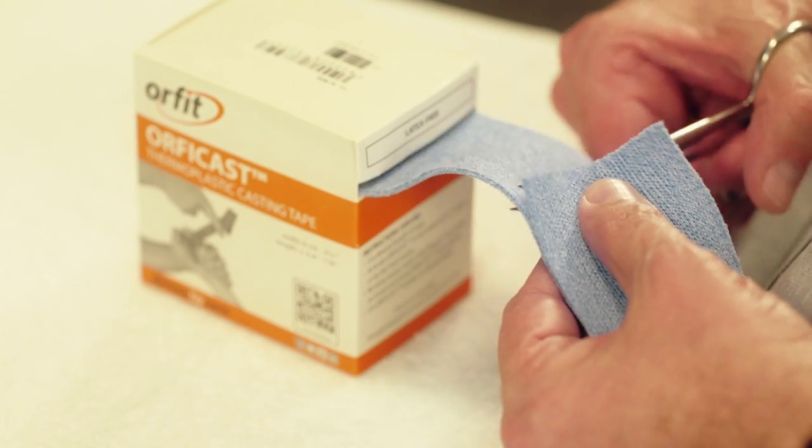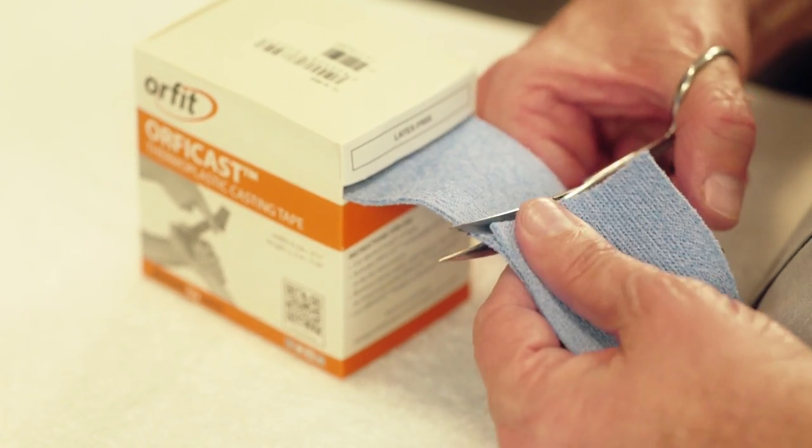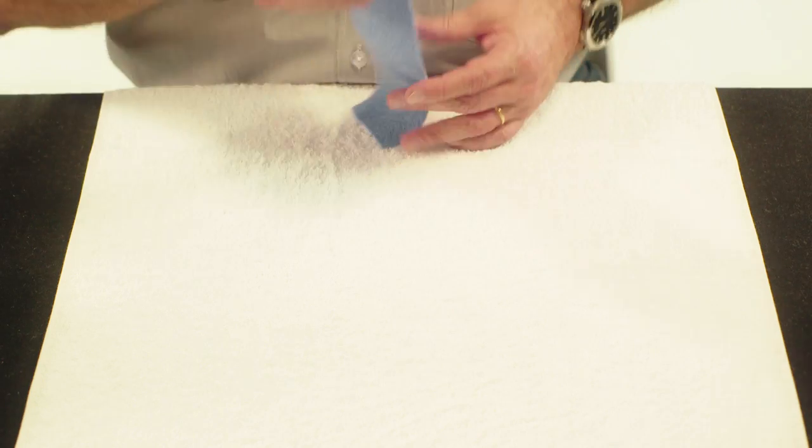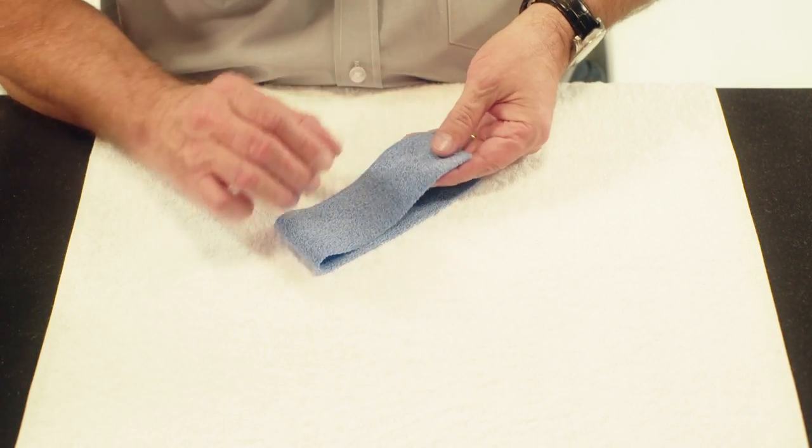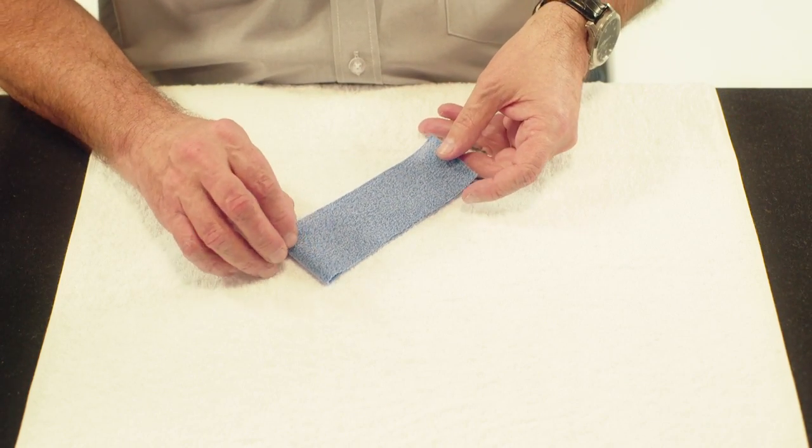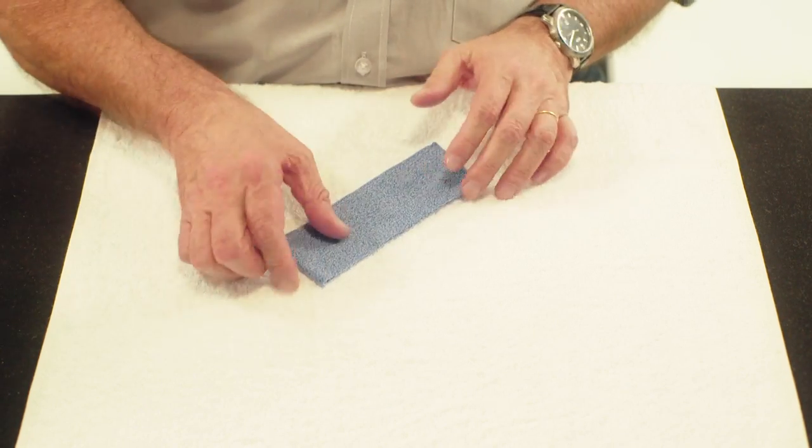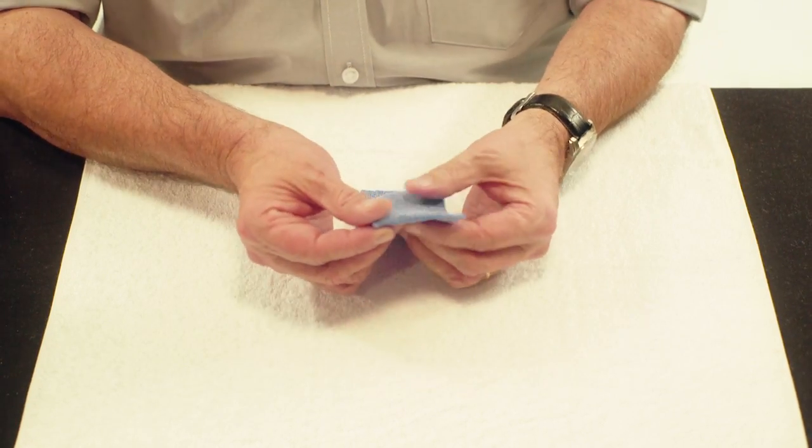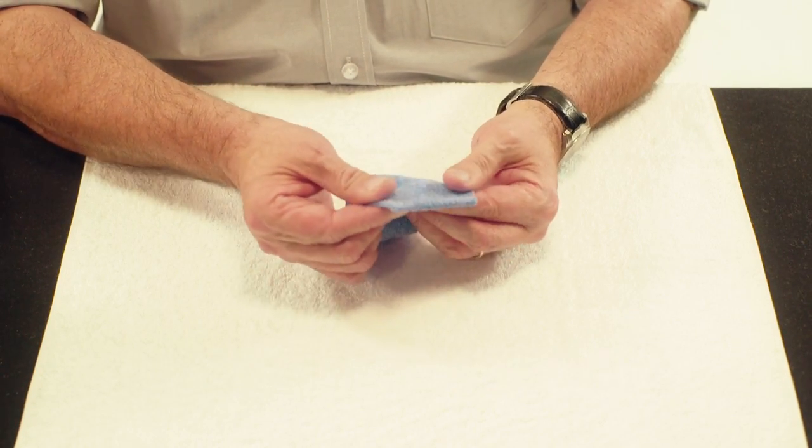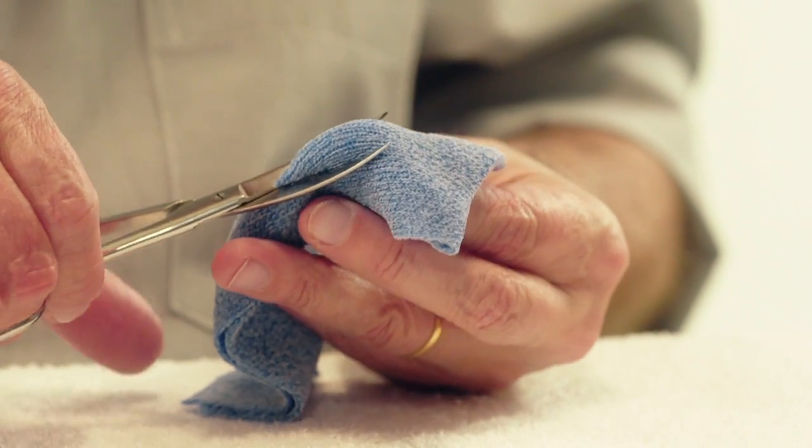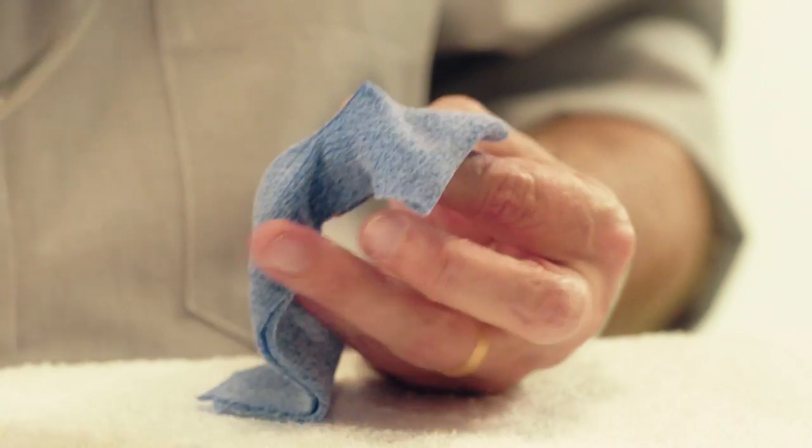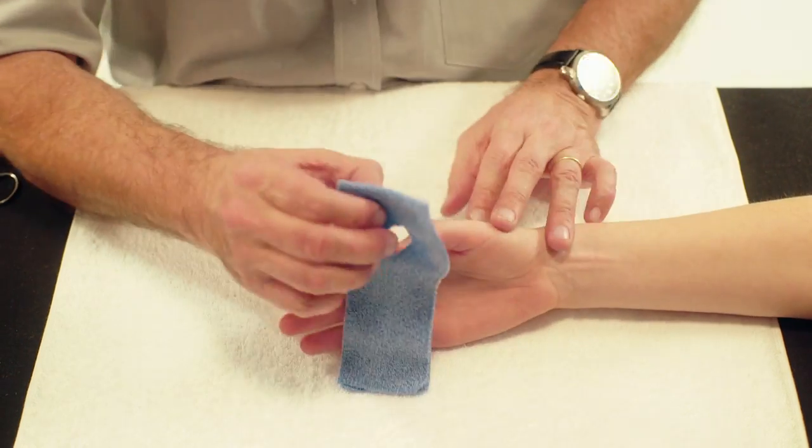After heating, fold the material in half widthwise and stretch it a little. Cut a hole for the thumb at one third of the material. Pull the Orficast over the thumb.